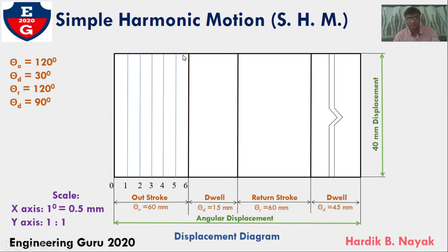After this, there would be dwell. Follower is going to rest, so I am taking it as 30 degrees and no need to divide because during dwell, follower neither moves upward nor downward.